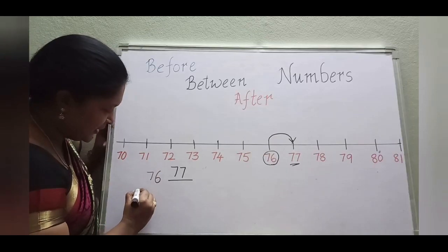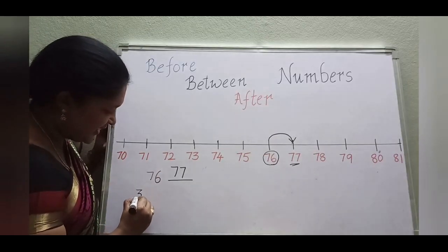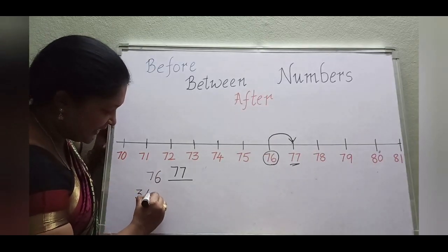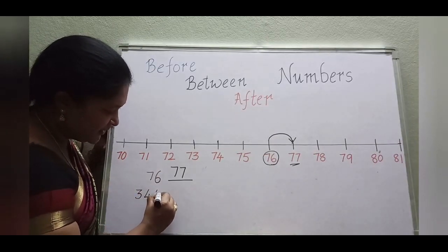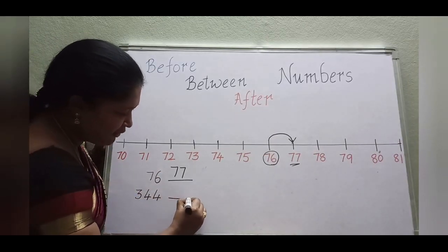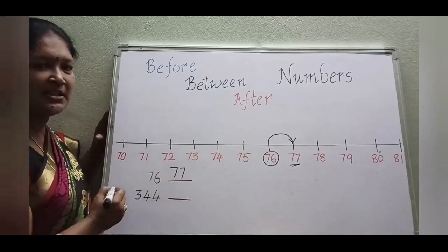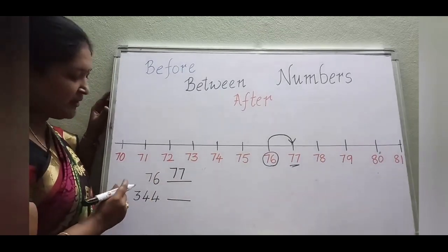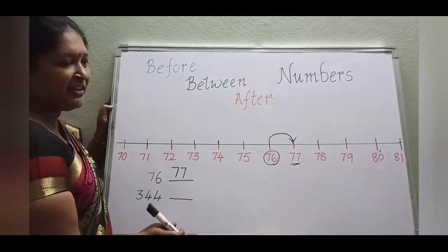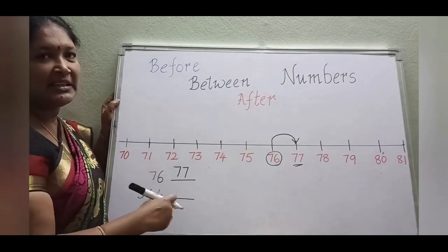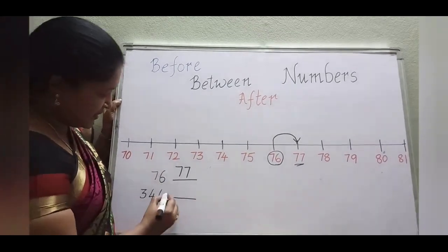For example, 344. What is the after number of 344? After number means the next number.